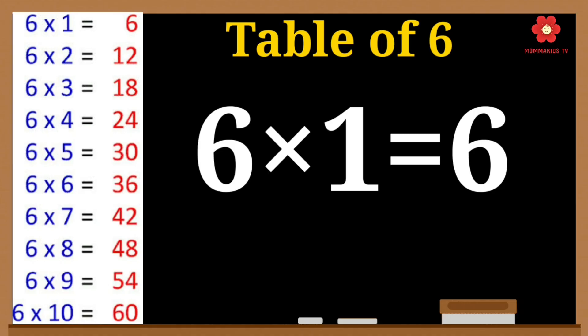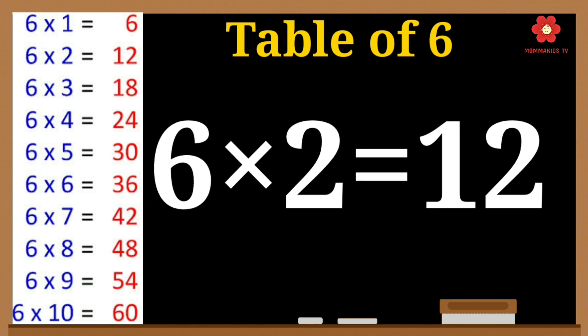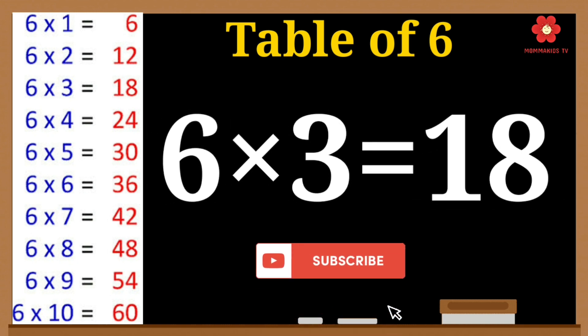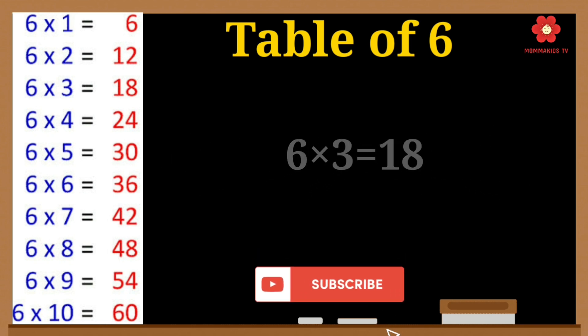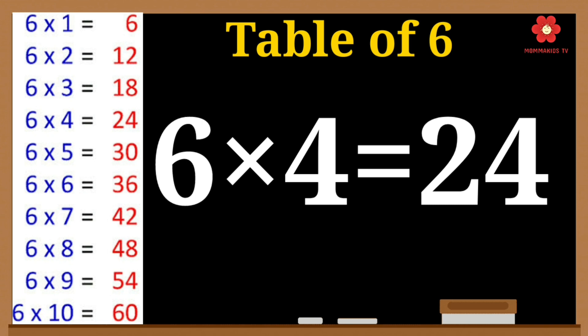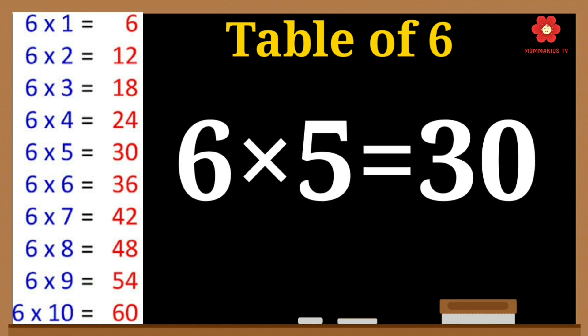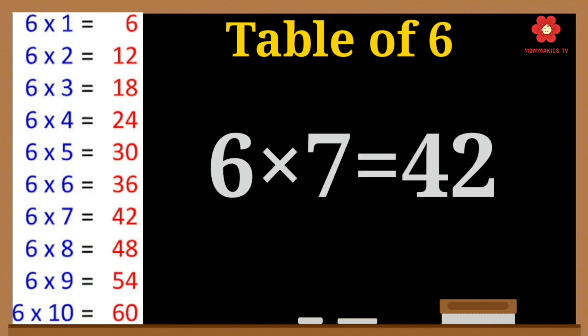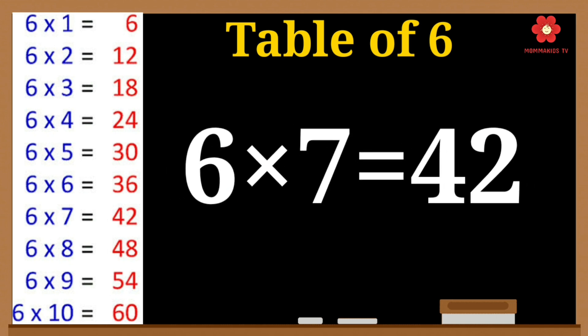6 ones are 6. 6 twos are 12. 6 threes are 18. 6 fours are 24. 6 fives are 30. 6 sixes are 36. 6 sevens are 42.